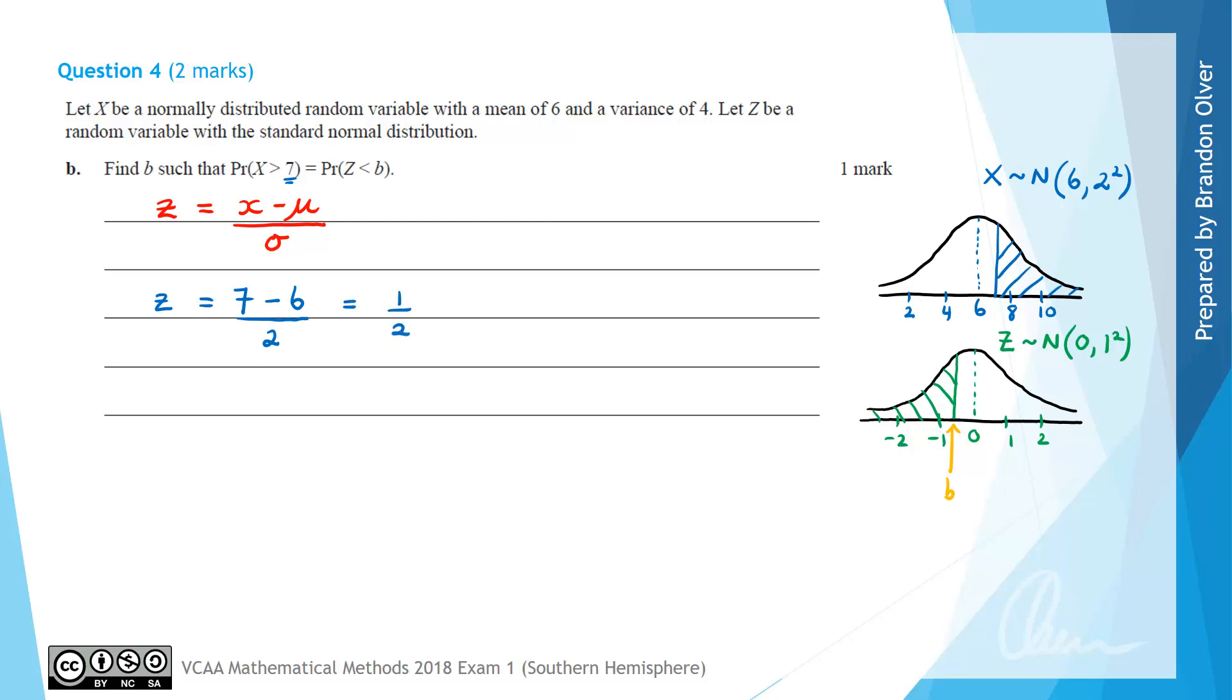However, from our diagram we can see that B is negative, so therefore B is equal to negative one half, and that is the answer to this question.